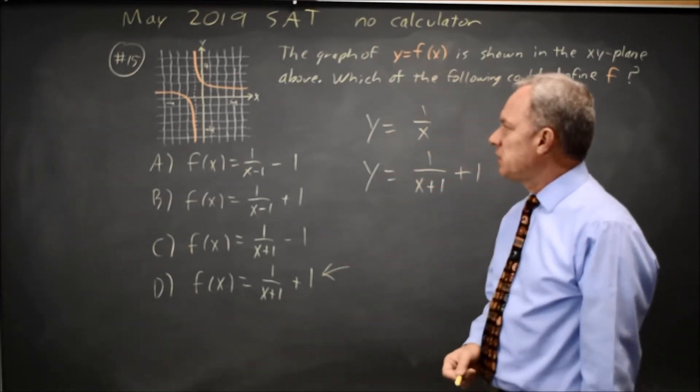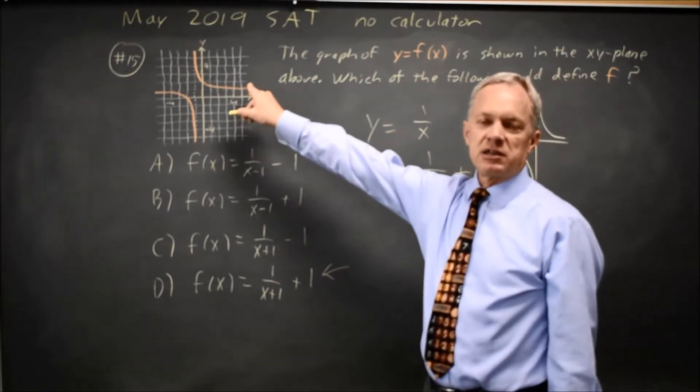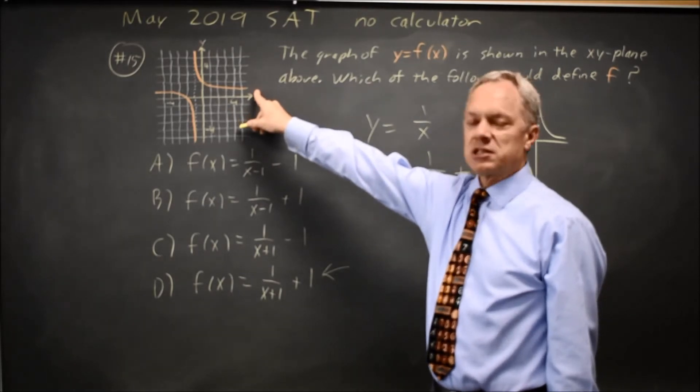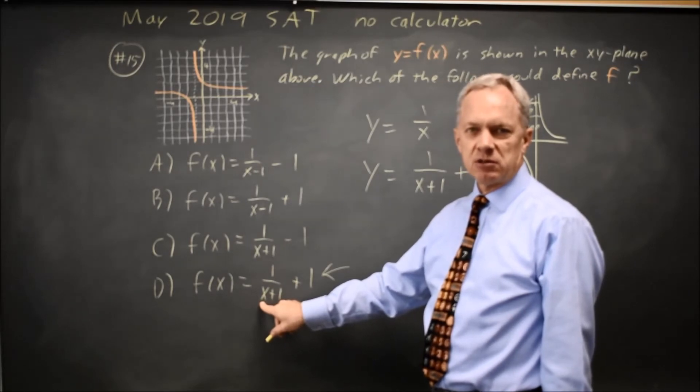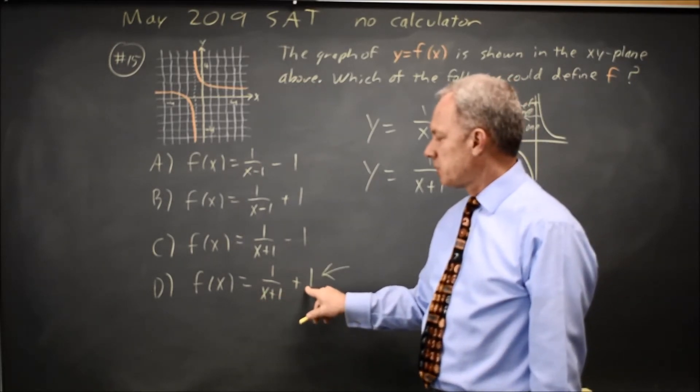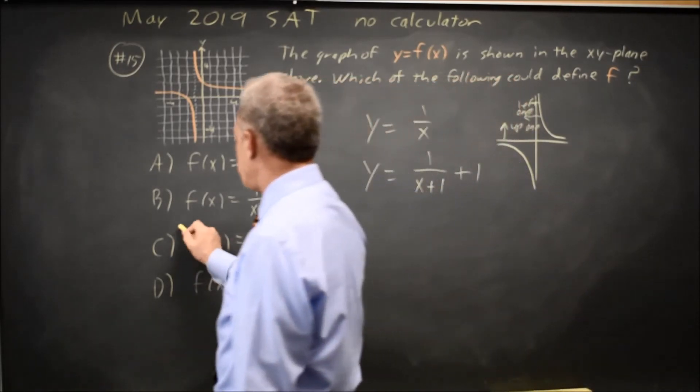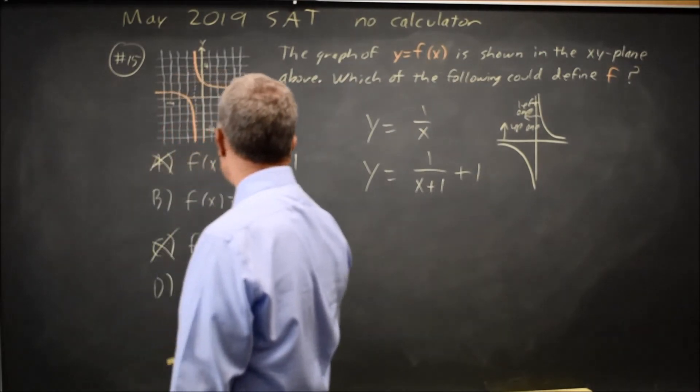Alternatively, if you put a large positive x value in, you should get something very close to 1. And 1 over something very large is very close to 0, so that plus 1 will be close to 1. That reasoning eliminates choices A and C.